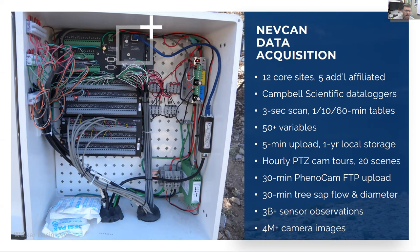Every 30 minutes we upload both near-IR and visible spectrum images to that network. We are measuring things of interest besides weather, like tree sap flow and diameter, snow water equivalent, and so on. Since 2011, we have over 3 billion sensor observations in the database and over 4 million camera images, not counting the phenology cameras.